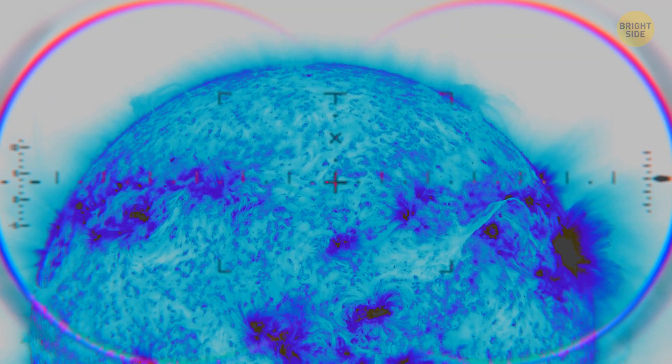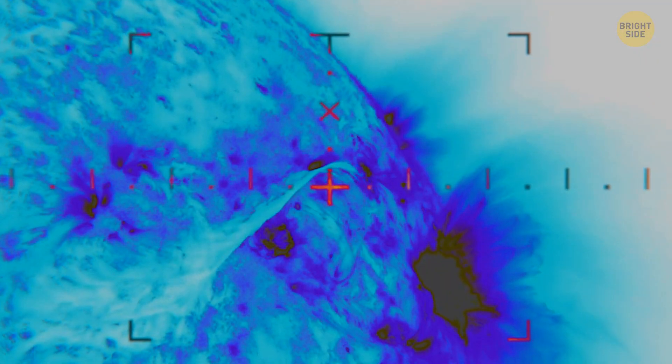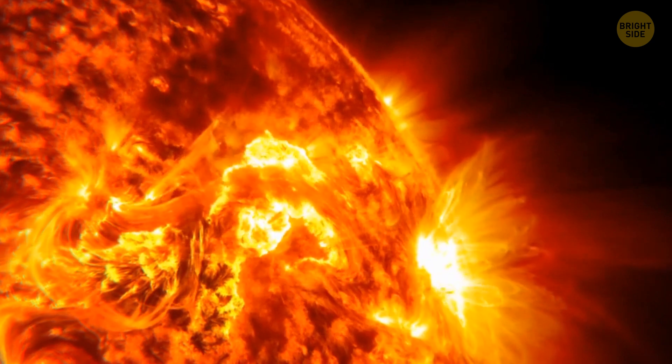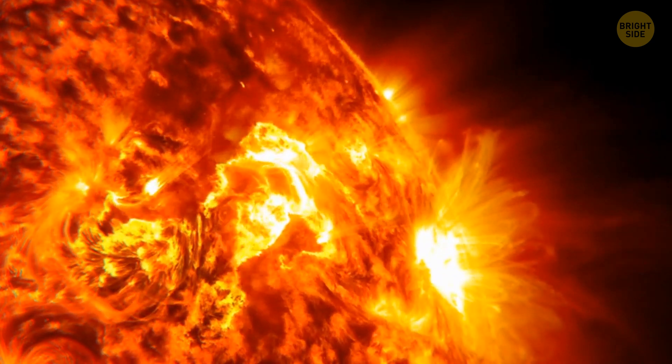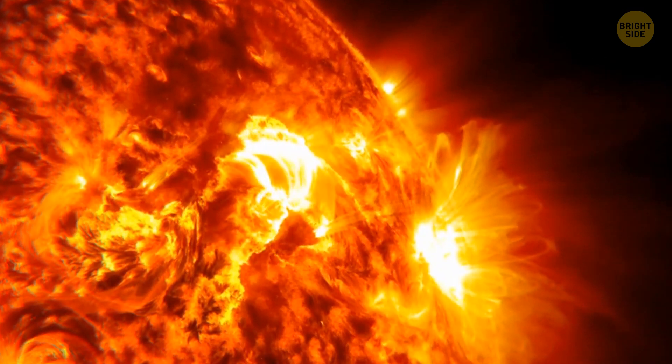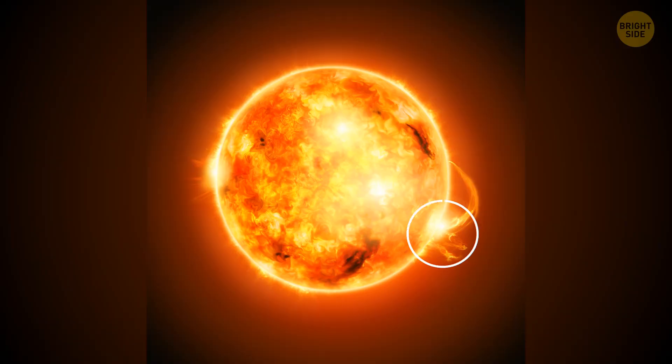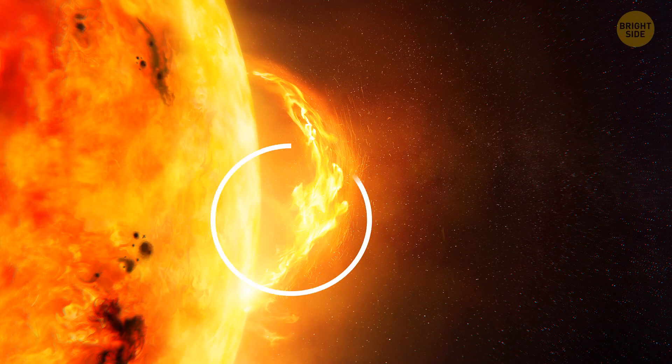Solar flares are something else we should be concerned about. They are powerful electromagnetic explosions on the sun associated with sunspots. As the super-hot plasma gas on the sun churns and twists, it also twists the magnetic field lines in the sunspots. When these lines snap, a powerful explosion releases X-ray and gamma radiation at the speed of light. Visible gases are also released.